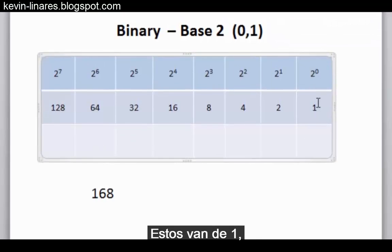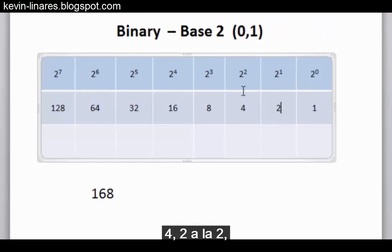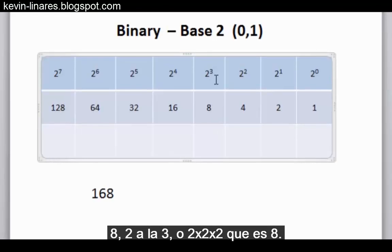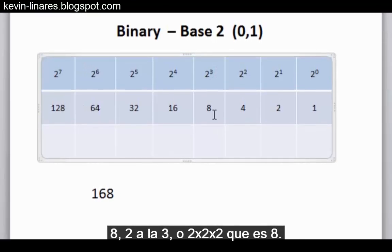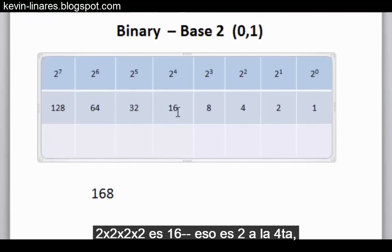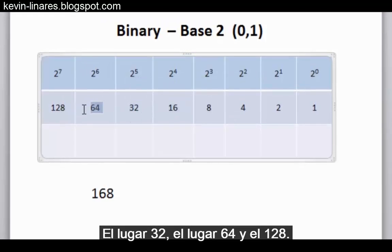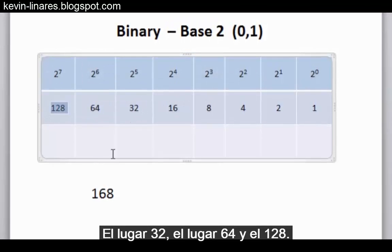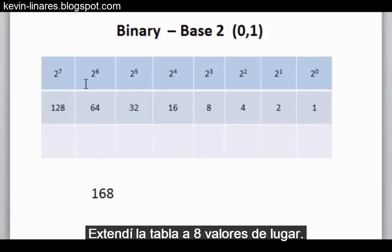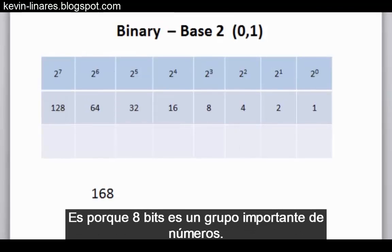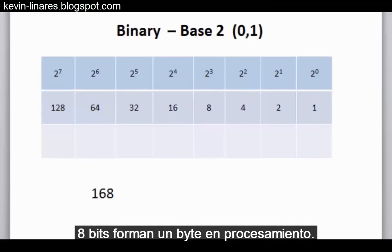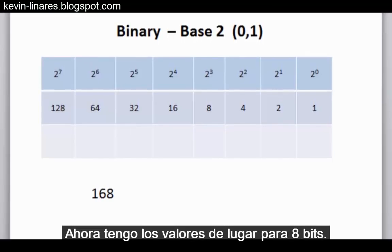The place values go from 1, which is 2 to the 0, to 2, 2 to the 1, 4, 2 to the 2, 8, 2 to the 3, or 2 times 2 times 2 is 8, 2 times 2 times 2 times 2 is 16, that's 2 to the 4th power, the 32's place, the 64's place, and the 128's place. Notice that I extended the table to 8 place values. That's because 8 bits is an important grouping of numbers. 8 bits makes a byte in computer processing.